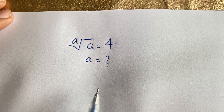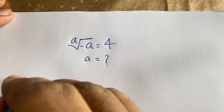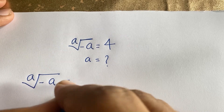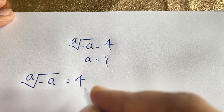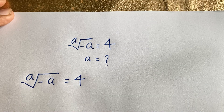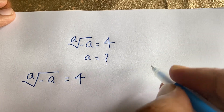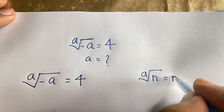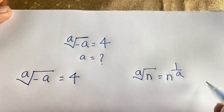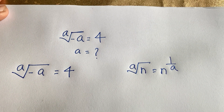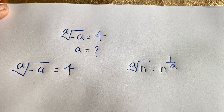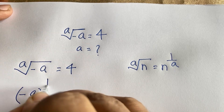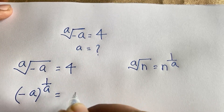Our question is: a square root of minus a is equal to 4. Using the exponential rule that the a-th root of n equals n to the power 1 over a, we can rewrite this as: minus a, whole to the power 1 over a, is equal to 4.